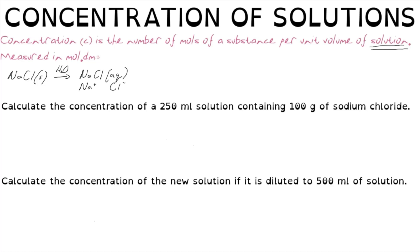We need to be able to calculate the number of moles of a substance present even when we don't necessarily have the mass. So we use concentration, which gives us the ratio of the number of moles of substance per unit volume of solution. As a result, concentration is measured in moles per cubic decimetre.